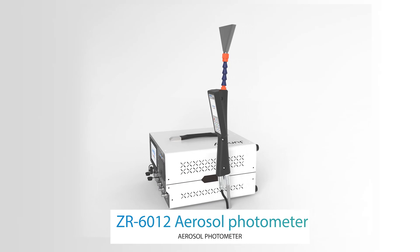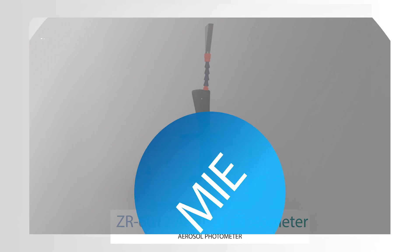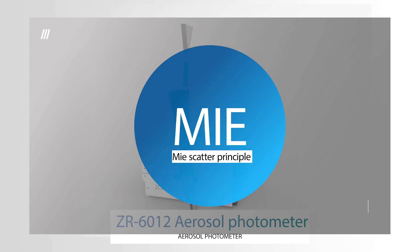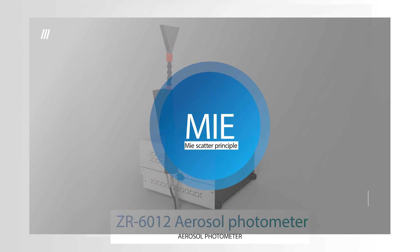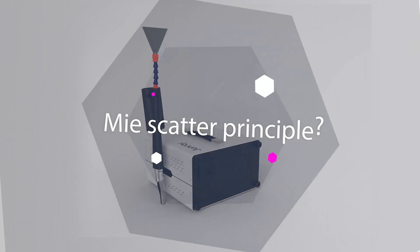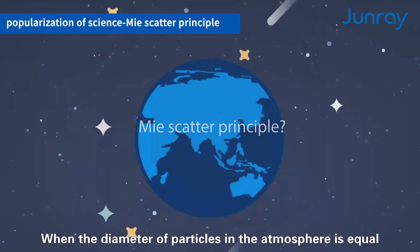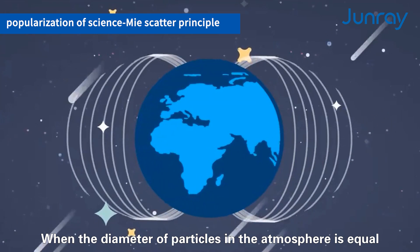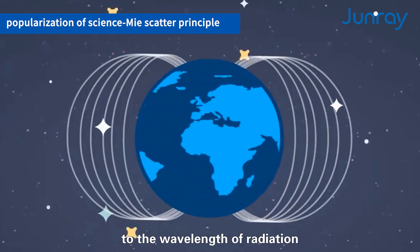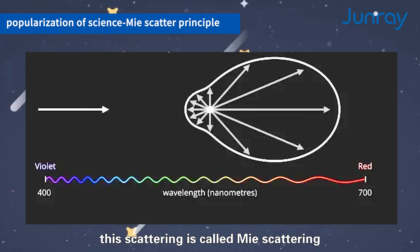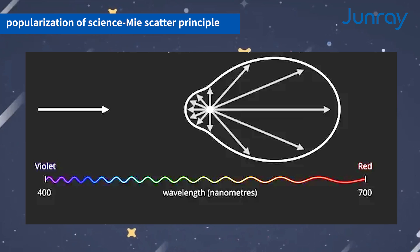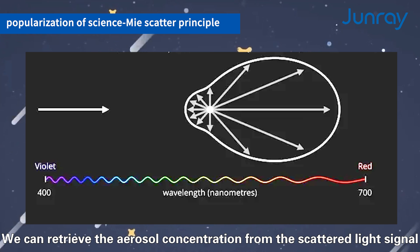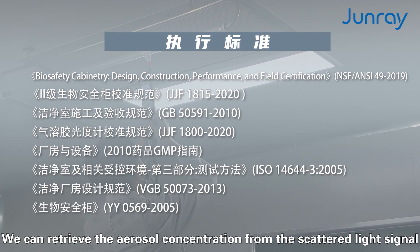The ZO6012 aerosol photometer is designed based on the Mie scatter principle. When the diameter of particles in the atmosphere is equal to the wavelength of radiation, this scattering is called Mie scattering. We can retrieve the aerosol concentration from the scattered light signal.